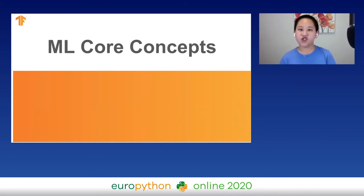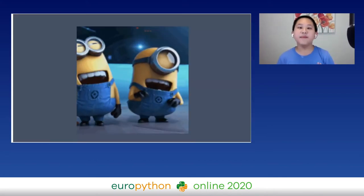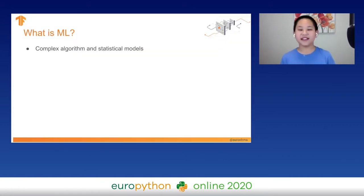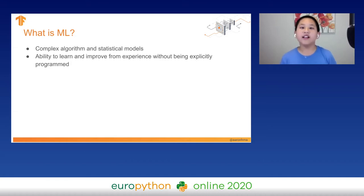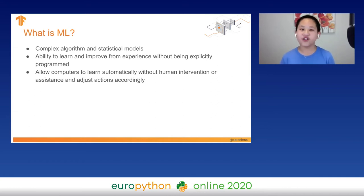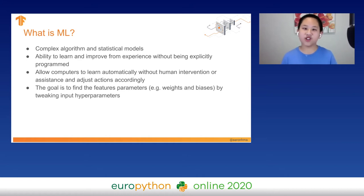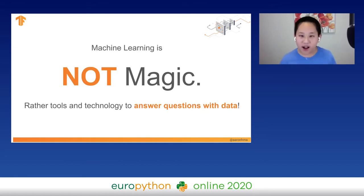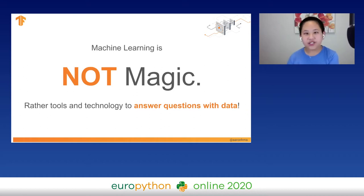Let's start off by talking about machine learning core concepts. Machine learning is the study of complex algorithms and statistical models. It has the ability to learn and improve from its own experience without being explicitly programmed, without any human intervention or assistance. The goal in machine learning is to find the algorithm along with the weights and biases when tweaking the input hyperparameters that we, as humans, give it. So machine learning is not magic or a black box — it's easy to answer questions based on data.